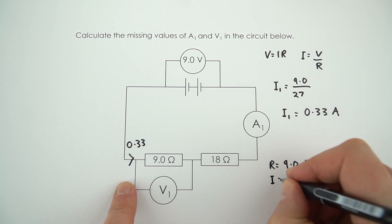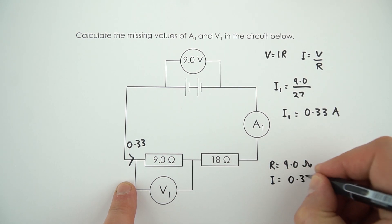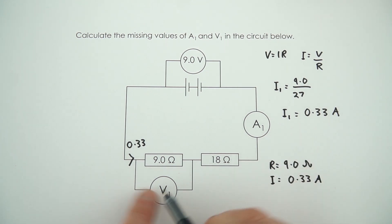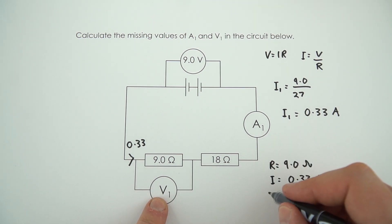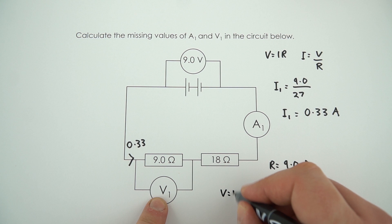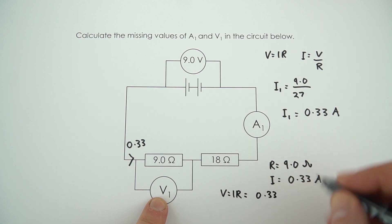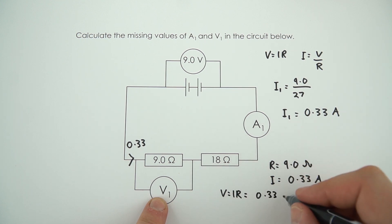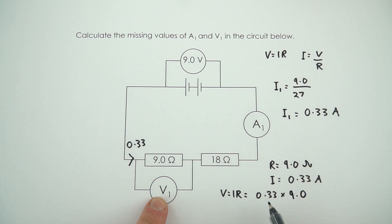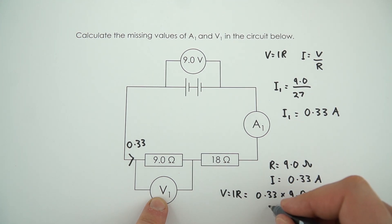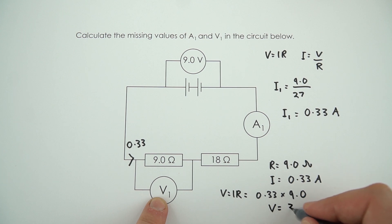The value of the current I is equal to 0.33 amps, and we need to know the value of V. Remember that V is equal to I times R, so the value of I is 0.33, the value of R is equal to 9.0, and that means we've got a third times 9. The value of V is just going to be equal to 3.0 volts.